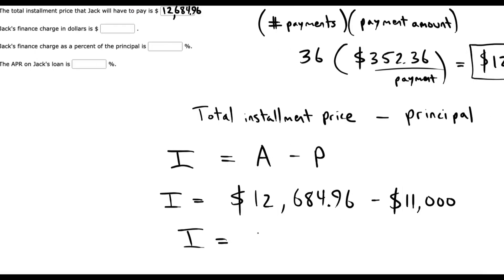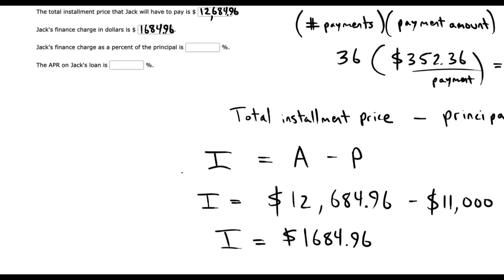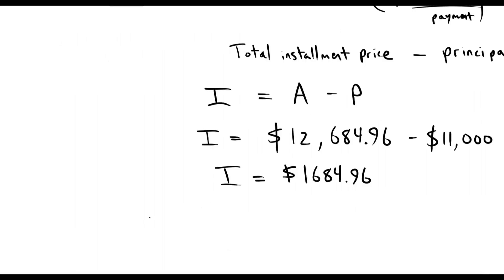His interest amount then is $1,684.96 as a dollar amount. But we have to figure out now how much is that as a percent of the principal. That's actually the value called F in these problems.